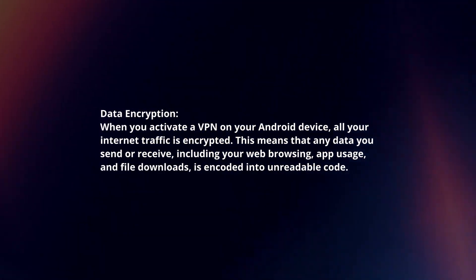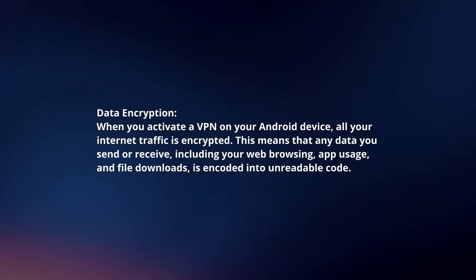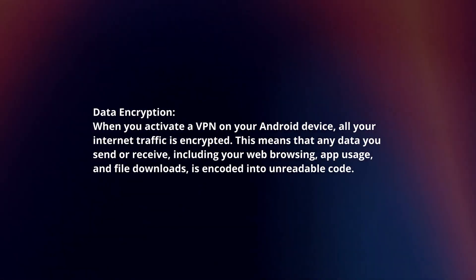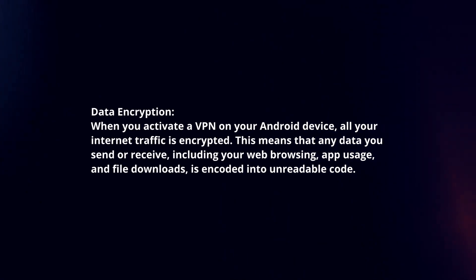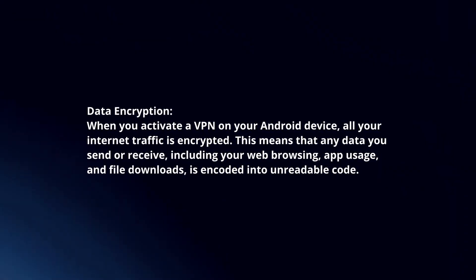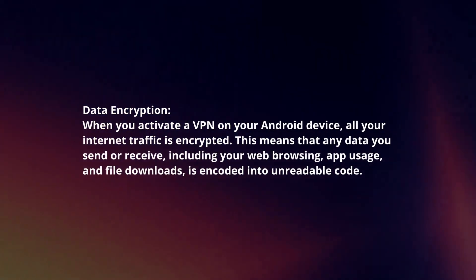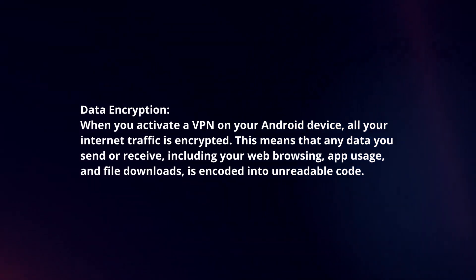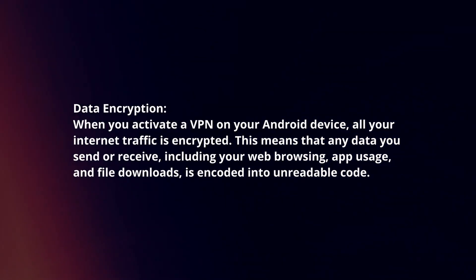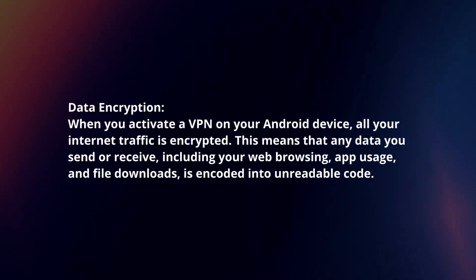Data encryption: When you activate a VPN on your Android device, all your internet traffic is encrypted. This means that any data you send or receive, including your web browsing, app usage, and file downloads, is encoded into unreadable code.